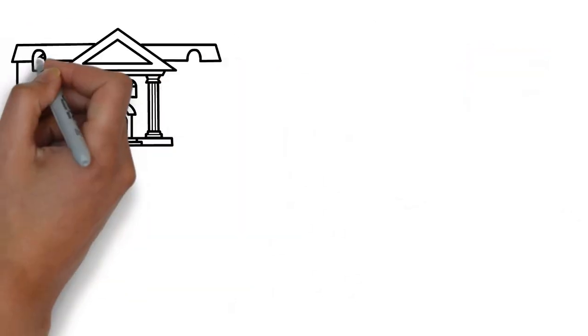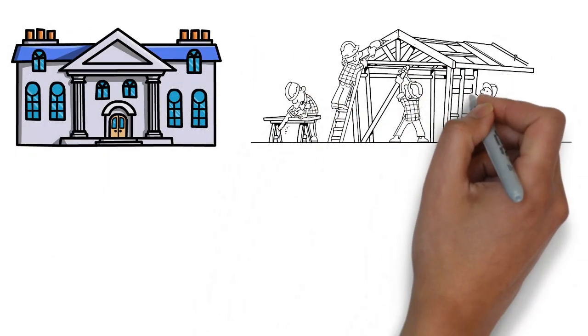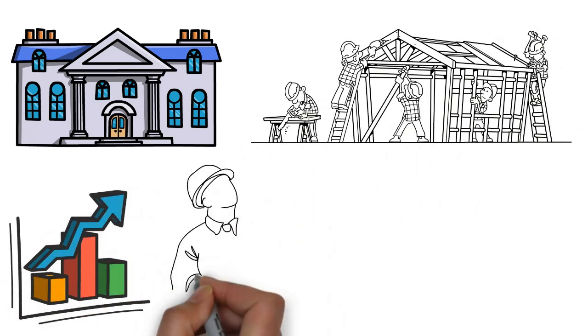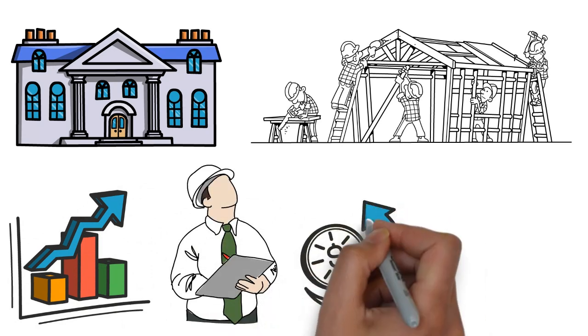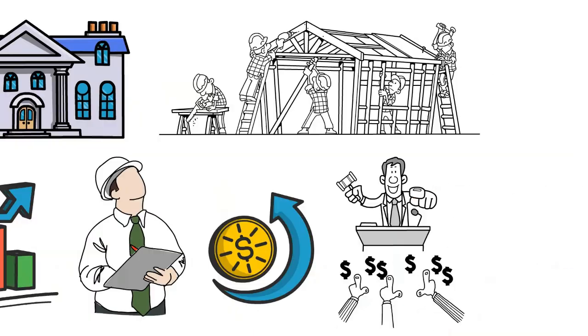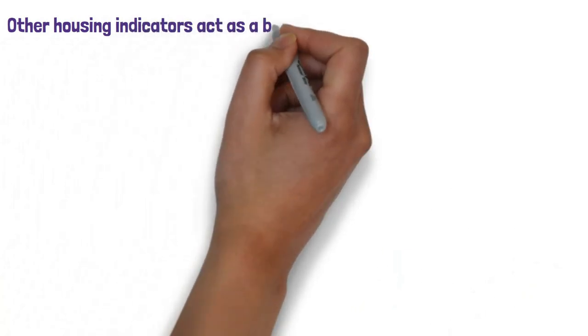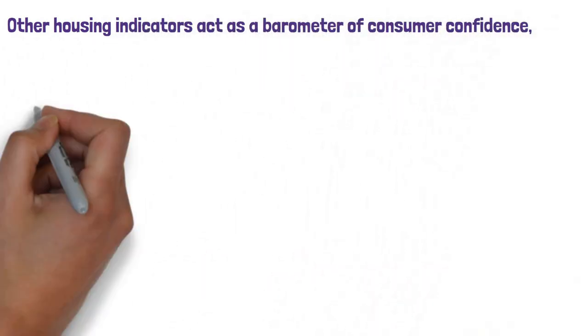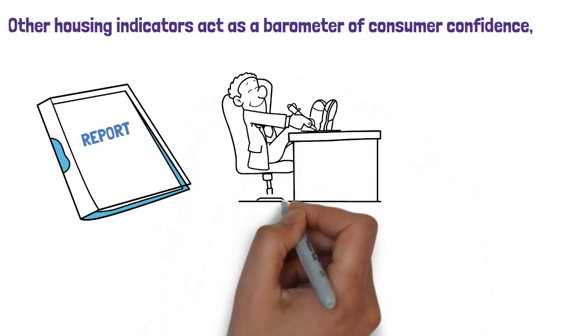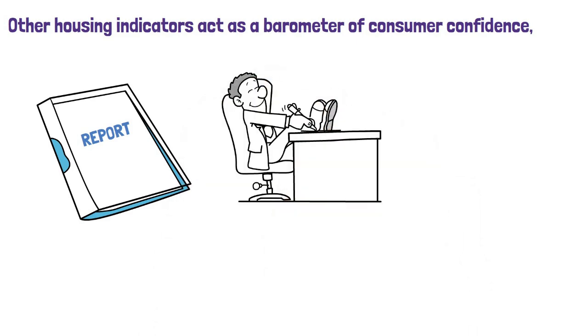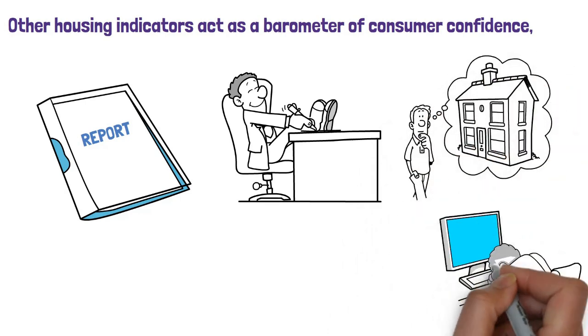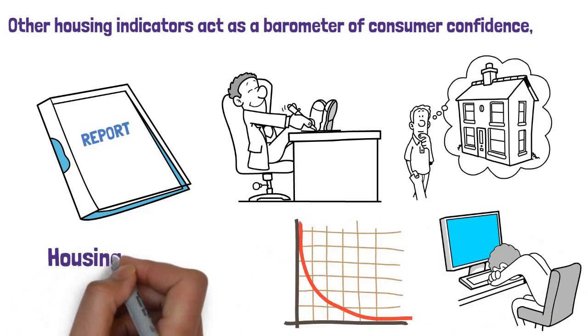Economists pay close attention to the number of housing starts, or new housing construction programs breaking ground each month. An increase in housing starts means that builders are confident that the economy will continue to perform well over the next six months and that consumers will have available cash to buy new homes. Other housing indicators act as a barometer for consumer confidence, like the monthly reports of pending home sales and existing home sales. When consumers feel good about their future job security and earning potential, they're more likely to make a big financial plunge like buying a new home. When they worry about layoffs and stock market declines, housing sales numbers go down.